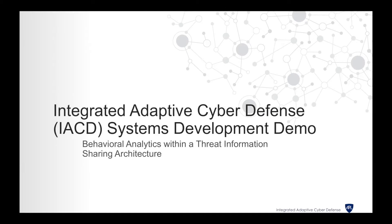Threat information sharing is a system that allows an organization to share cyber threat information such as indicators, context, and analytics with other trusted organizations. It is a cooperative effort to reduce the effects and impact of cyber attacks. Through the course of information sharing, however, we are posed with some problems with either human error or malicious human intervention.